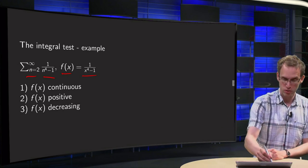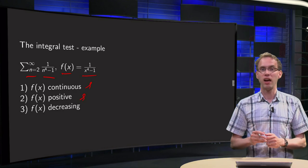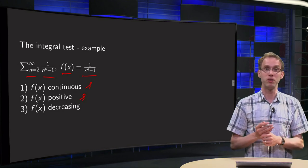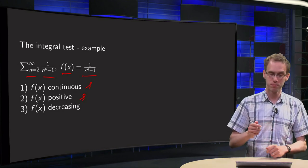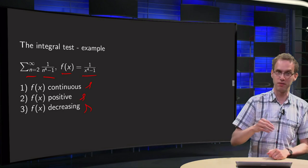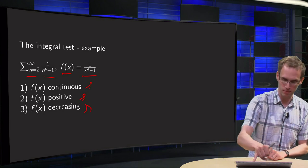We know continuity and positivity are fine, and for the decreasing part you compute f prime, and that is also fine — f prime is negative. So that is all ok.